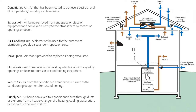Next is exhaust air. This is the air being removed from any space or piece of equipment and conveyed directly to the atmosphere by means of opening or duct. They have a couple of different types — you have a more targeted fan, like your exhaust fan in your bathroom. You walk in, flip a switch, and it starts pulling air directly out and ejecting it from your house. Some houses have a full exhaust fan always running, constantly ejecting air out to recycle it, and that gets balanced with your outside air.